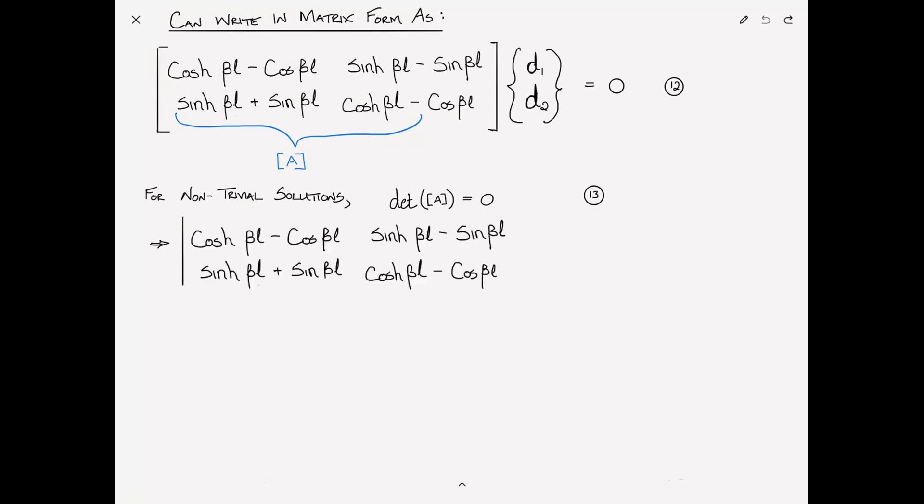So we've seen this before. We take the determinant of the coefficient matrix and we set that equal to zero. How do we take the determinant? It's the product of the diagonals, (cosh βL - cosine βL)² minus the product of the off-diagonal terms, (sinh βL - sin βL) times (sinh βL + sin βL), and that is equal to zero. Let's expand this out. So we get cosh² βL - 2 cosh βL cos βL + cos² βL minus, well, this just results in a difference of two squares, right? So it's the first term squared minus the second term squared. sinh² βL - sin² βL. We set that equal to zero.